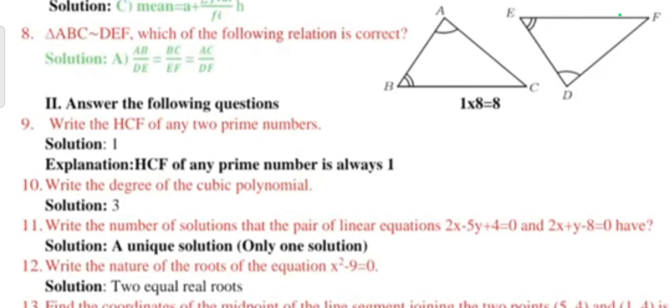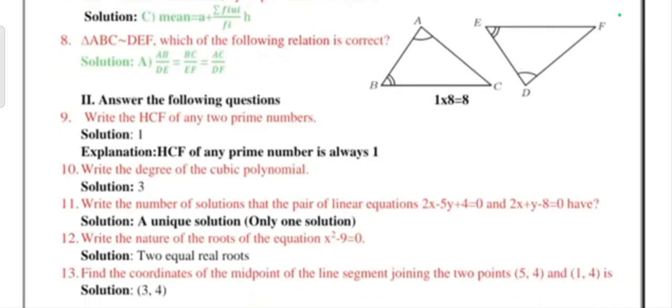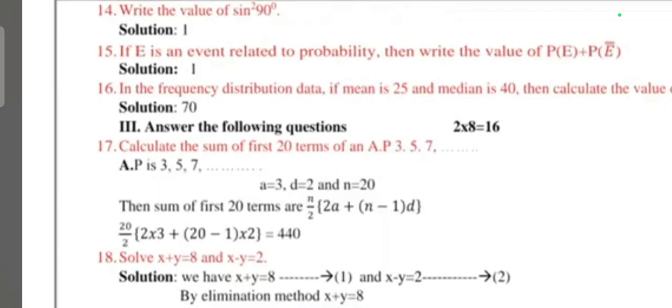Next section: Answer the following questions. Question 9: Write the HCF of any two prime numbers. Answer is 1. Question 10: Write the degree of the cubic polynomial. Answer is 3. Question 11: Write the number of solutions that the pair of linear equations 2x - 5y + 4 = 0 and 2x + y - 8 = 0 have. Answer is only one solution. Question 12: The nature of the roots of the equation x² - 9 = 0. Answer is two equal real roots. Question 13: Find the coordinates of the midpoint of the line segment joining the two points (5, 4) and (1, 4). Answer is (3, 4). Question 14: Write the value of sin²θ + cos²θ. Answer is 1. Question 15: If E is the event related to probability, then write the value of P(E) + P(E̅). Answer is 1. Question 16: The frequency distribution data, if mean is 25 and median is 40, then calculate the value of mode. Answer is 70.